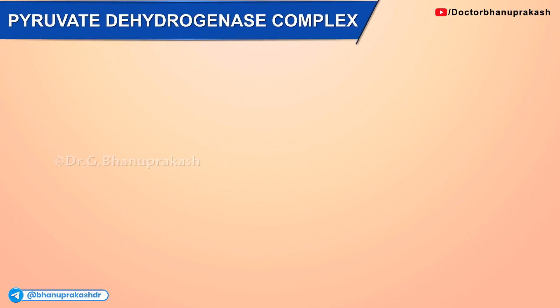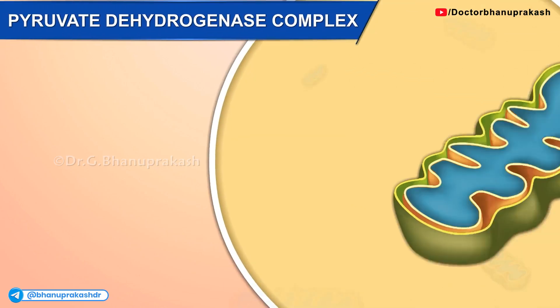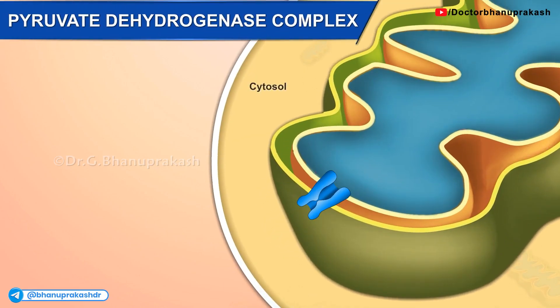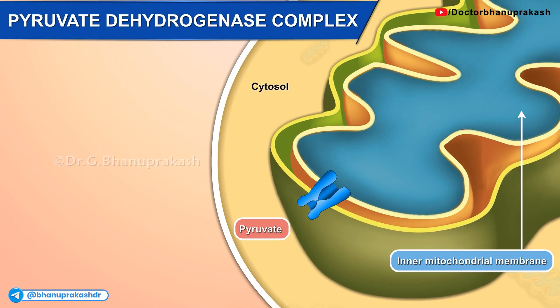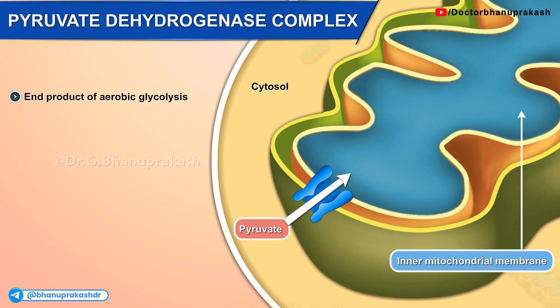Pyruvate dehydrogenase complex. Pyruvate produced in the cytosol as an end product of aerobic glycolysis enters mitochondria by a pyruvate proton symport, which is present in the inner mitochondrial membrane.